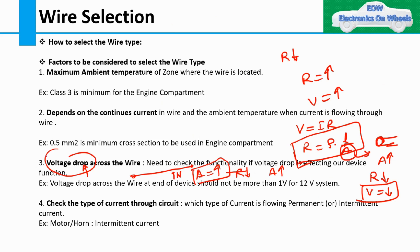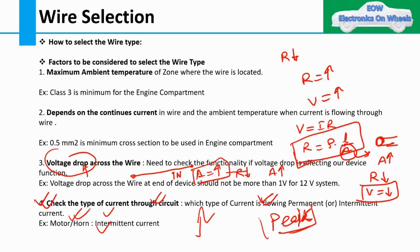The fourth factor is the type of current through the circuit — whether it is permanent current or intermediate current. Intermediate current has spikes or transients. Examples of loads that cause this type of current include motors and horns. These loads affect our cross-section selection, and we must consider peak current. We will take an example such as the starting system and charging system — selecting the wire from battery to starter motor or battery to alternator.